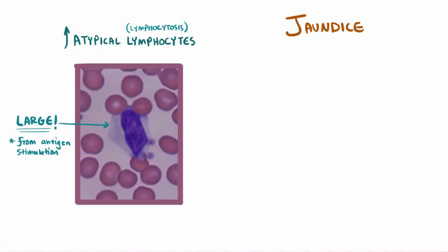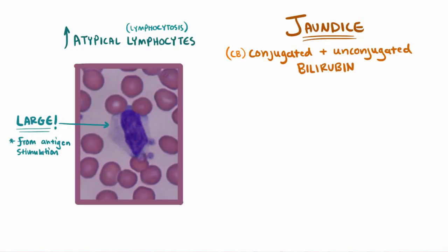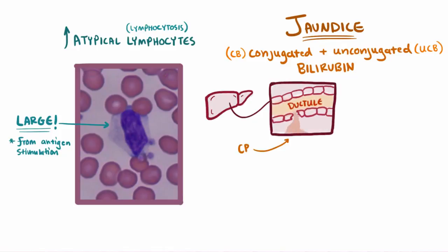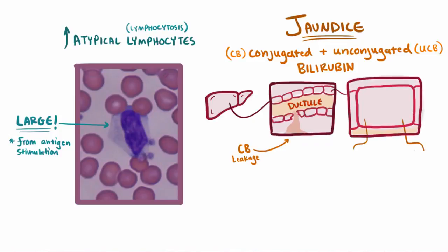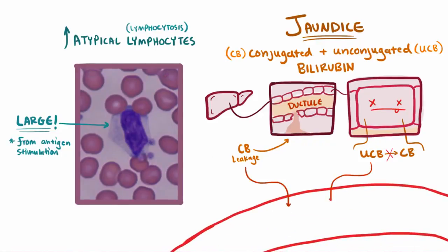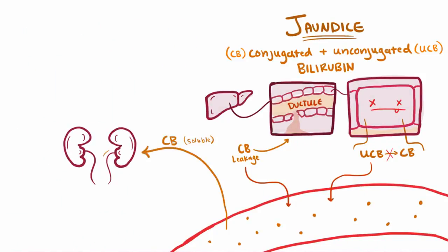Patients often also end up developing jaundice, with a mix of both conjugated bilirubin and unconjugated bilirubin. The conjugated bilirubin leaks out when bile ductules are damaged or destroyed when the hepatocytes die, because those hepatocytes make up some of its lining. Since these hepatocytes are dying, you also start to lose the ability to conjugate bilirubin and make it water-soluble, so you end up with unconjugated bilirubin as well. Some of the water-soluble conjugated bilirubin gets filtered into the urine, giving it a darker color.